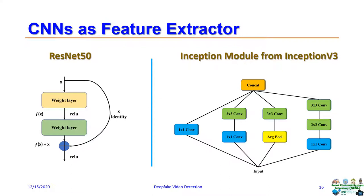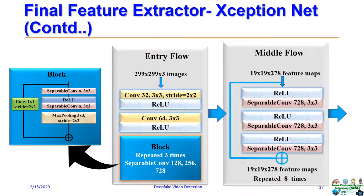This is the residual building block of ResNet-50, which uses a network-in-network architecture. This is the canonical inception module from Inception V3. ResNet-50 and Inception V3 are two of the CNNs we used as feature extractors. The third one is Xception Net, which is based on depthwise separable convolution.